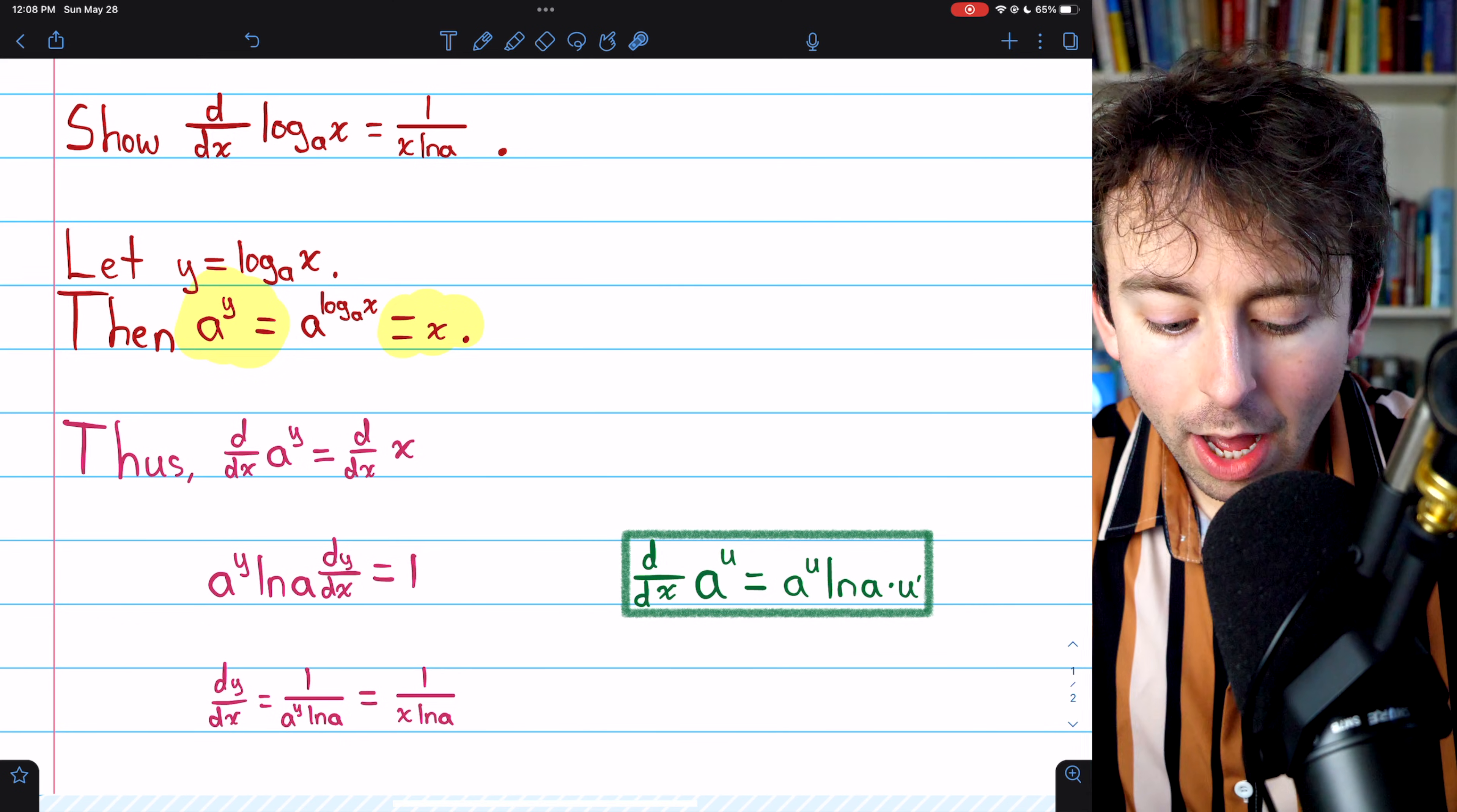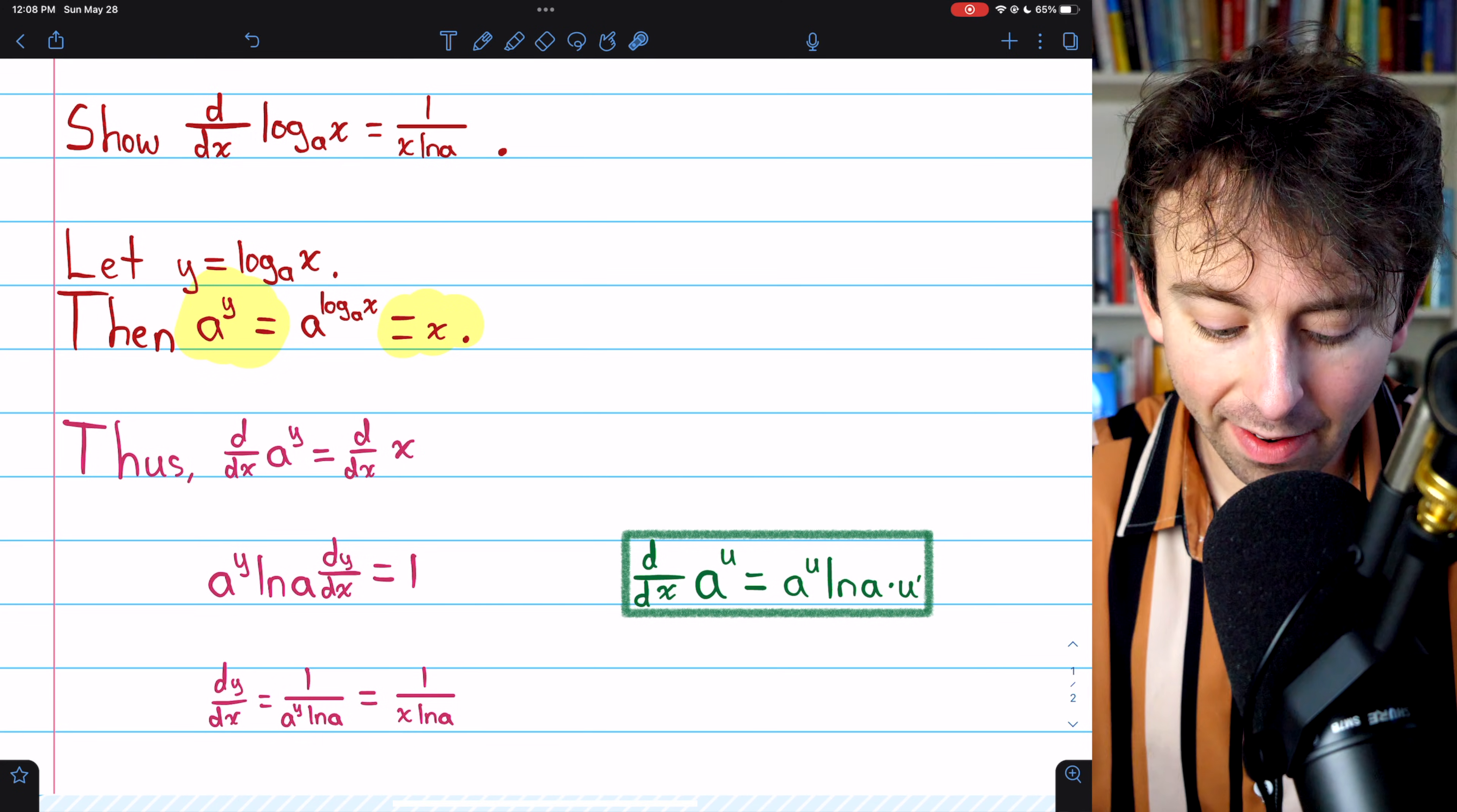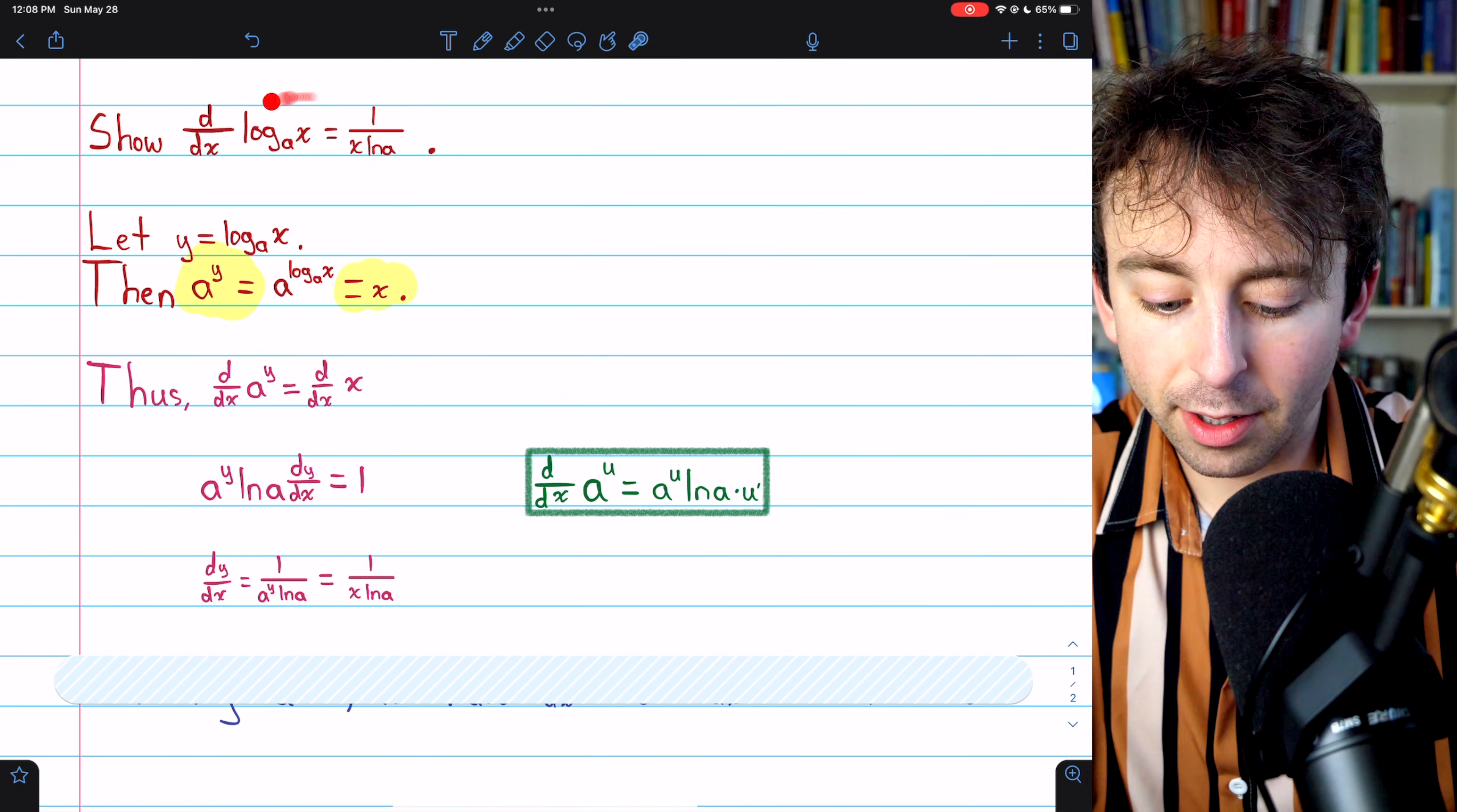But remember, a to the y, we already showed that's equal to x. So here, we can just replace a to the y with x. And we have that dy dx, the derivative of log base a of x, is equal to 1 over x times the natural log of a. And that verifies this formula.